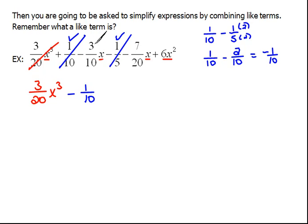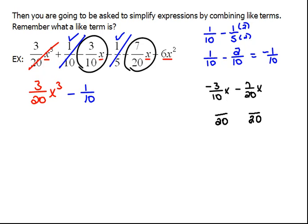Next we have a negative 3/10th x and we can combine that over here with this term because those are both plain x's. So again, if you need to come out to the side and do that, you certainly can. That would be negative 3/10ths x minus 7/20ths x. Well here again, we're going to have to have a common denominator, which in this case is going to be 20. So I have to multiply 10 times 2 to get 20, which means I have to do the exact same thing to the top.